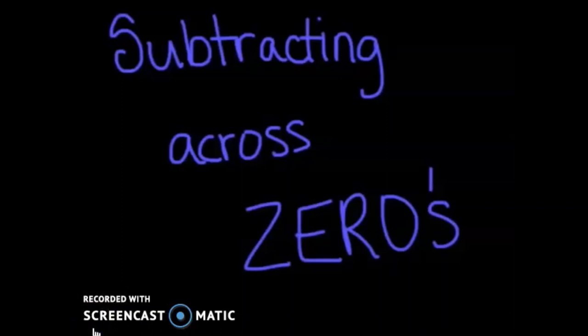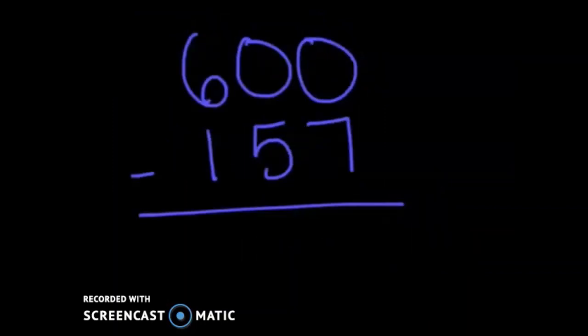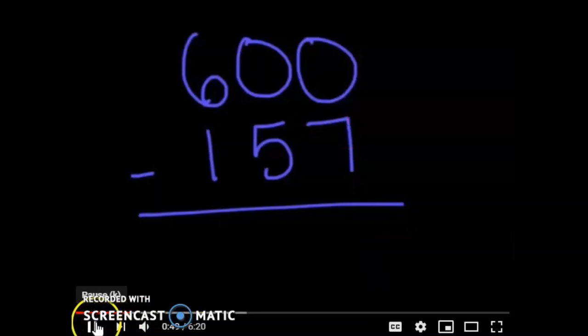Today we're going to be looking at subtracting across zeros. You guys have already really narrowed in your skills and become very skilled at subtracting with regrouping. Well, now we're going to throw in just kind of a challenge or a little bit of a twist. So if we take what we've practiced with subtracting with regrouping and we look at this problem, let's go ahead and dissect it and see what we can do with this problem. So first, where do I always start?